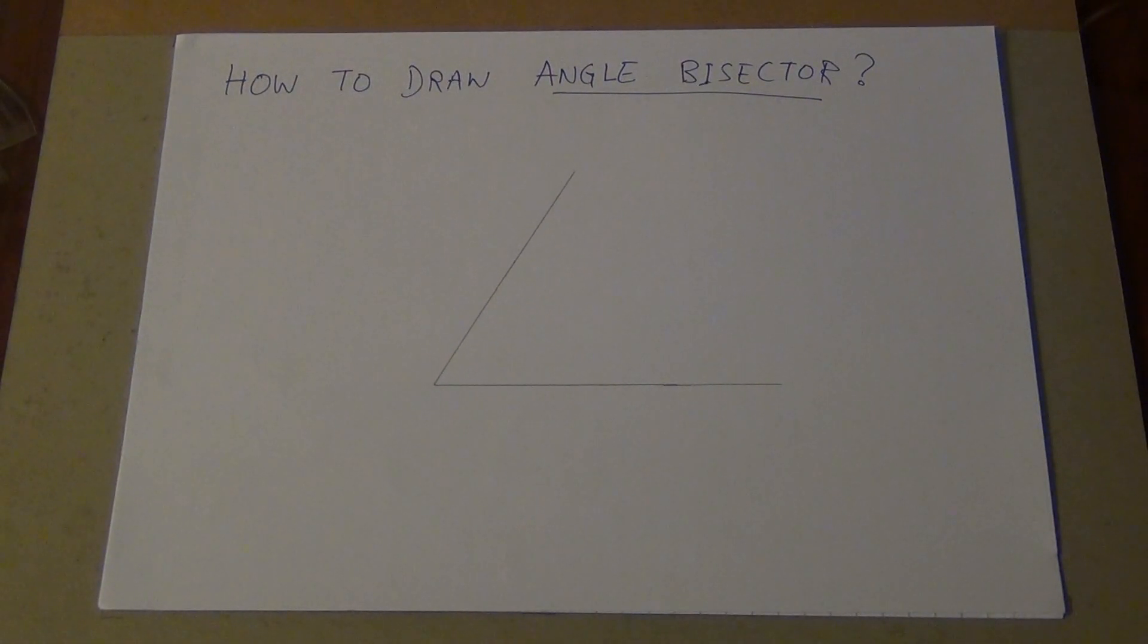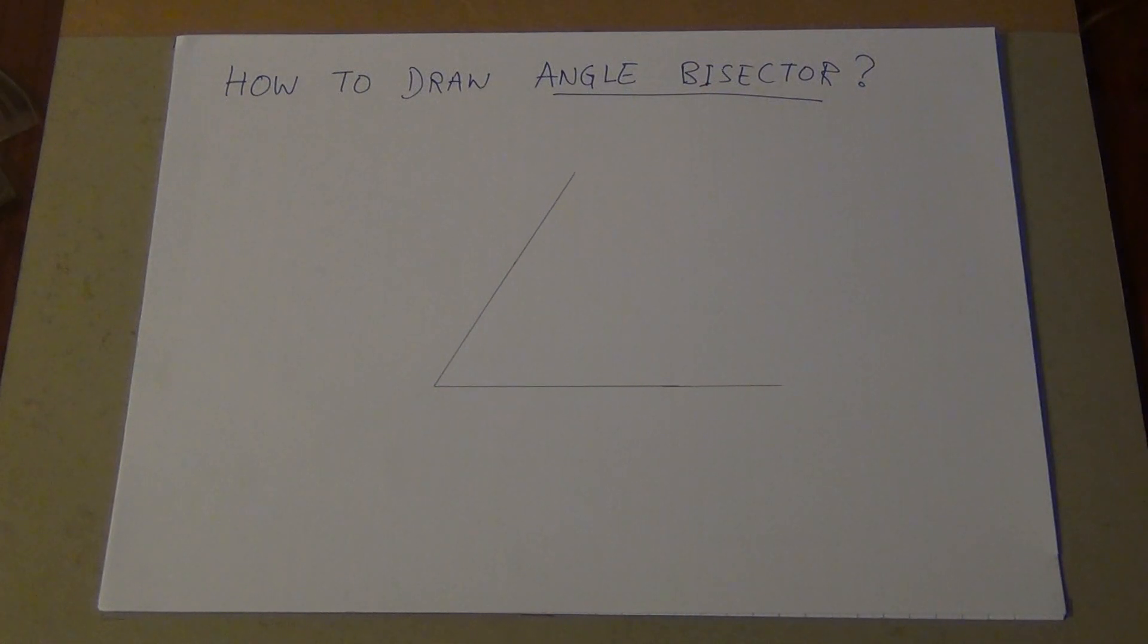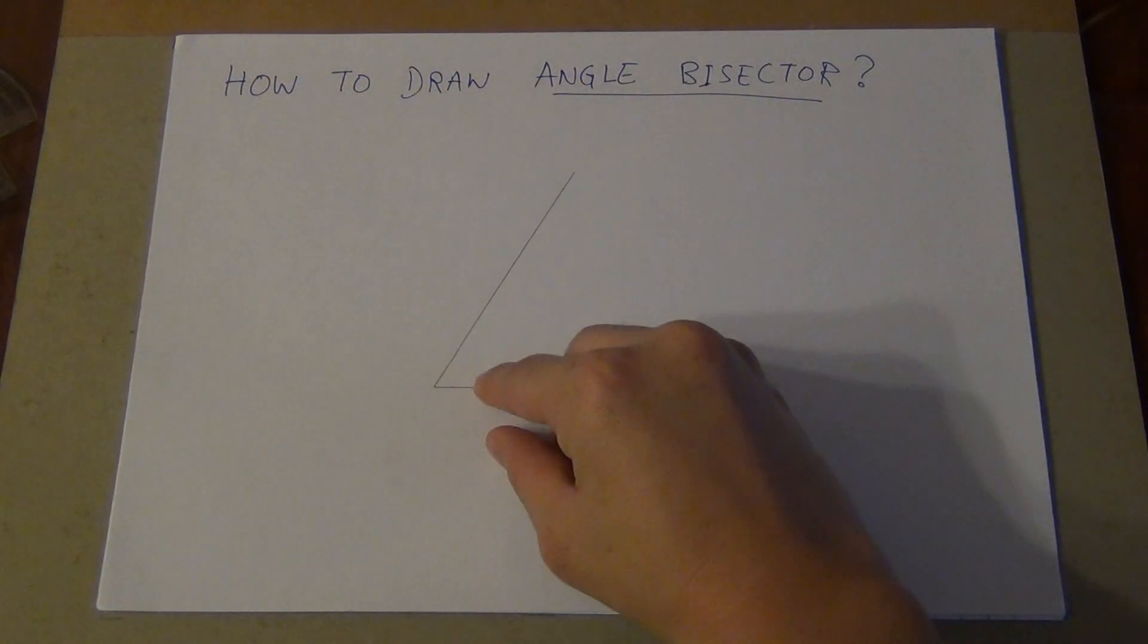This video will teach you how to exactly draw an angle bisector. There are several techniques that you have to know before we start. First of all, what is the angle bisector? The angle is the size of how big the angle is. For example, in this case, the angle will be over here.